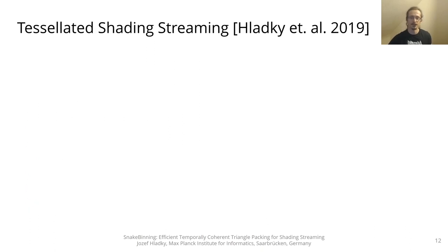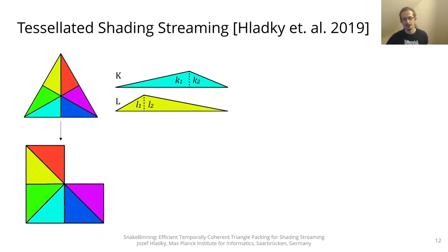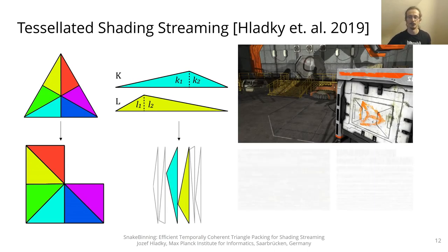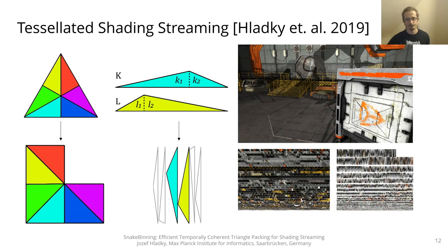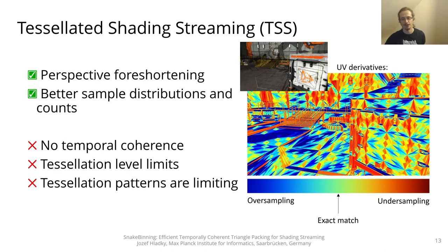The Tessellated Shading Streaming (TSS) method packs near-equilateral triangles into L-shapes to achieve good packing efficiency, while slanted triangles are just arranged next to each other in the atlas. While TSS supports perspective foreshortening and better sample distributions, it has no temporal coherence and the UV derivatives suffer from fixed patterns and limits of the tessellation stages.